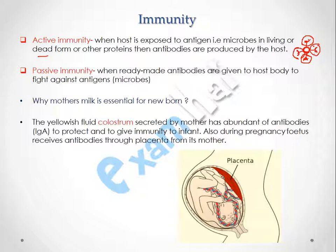Now we will discuss passive immunity. Passive immunity involves ready-made antibodies developed inside another host, like a horse, pig, or rabbit. Blood is taken from that host, antibodies are filtered out, and if there is any attack on humans by that same microbe, these antibodies are injected directly to kill the antigen on the spot. Examples of passive immunity include snake venom antiserum, rabies, and tetanus toxin treatment.